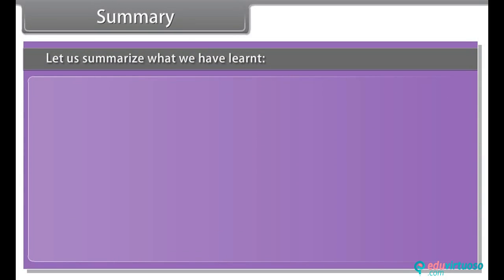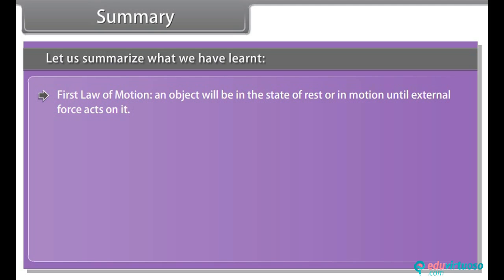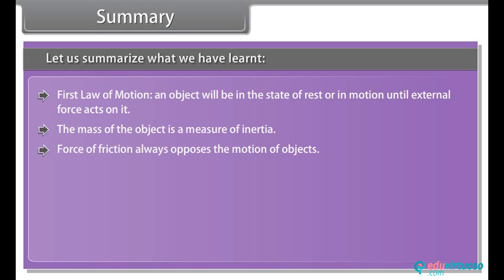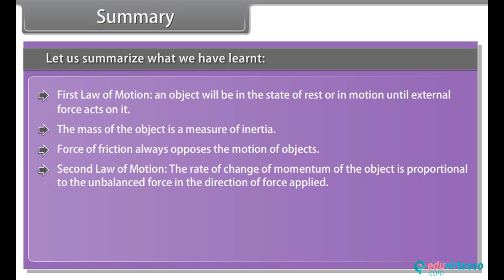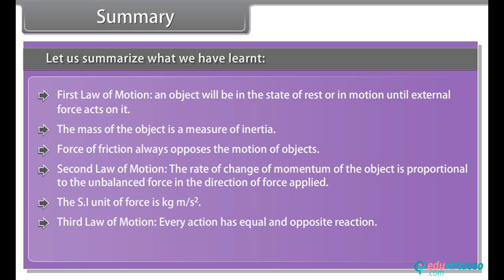Summary. Let us summarize what we have learned. First law of motion: an object will be in the state of rest or in motion until external force acts on it. The mass of the object is a measure of inertia. Force of friction always opposes the motion of objects. Second law of motion: the rate of change of momentum of the object is proportional to the unbalanced force in the direction of force applied. The SI unit of force is kilogram meter per second square. Third law of motion: every action has equal and opposite reaction. The total momentum is always conserved.